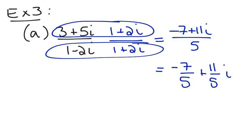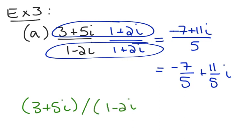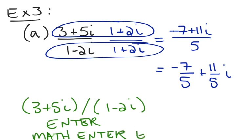You can try your particular graphing calculator by typing parentheses 3 plus 5i, close it, divide by parentheses 1 minus 2i, close it, hit enter, and if it gives a decimal answer, hit math enter enter to turn it back into a fraction. It may tell you the answer is negative 7 over 5 plus 11 over 5 i. And if it doesn't, some calculators — even newer ones — won't do this work for us.